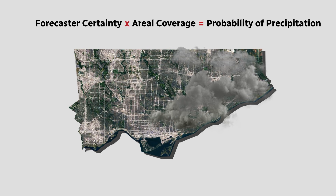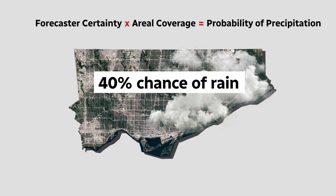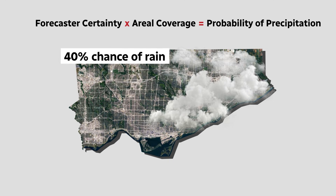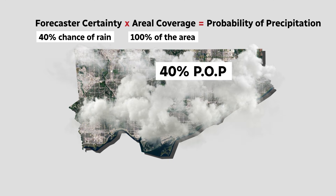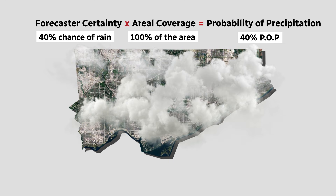But it is also true to say: if I'm only 40% confident it'll rain, but everywhere, still 40% chance. You just need to know the time frame for the forecast and the area it's covering.